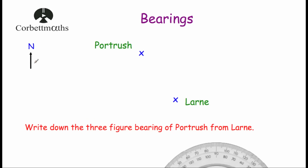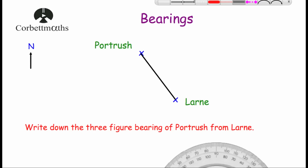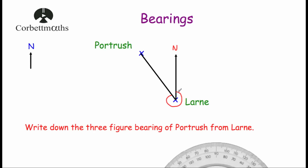So here's our next question. We've got Portrush and Larn, and the question says write down the three-figure bearing of Portrush from Larn. Our first step is to join up our two locations. We then read the question — we're starting at Larn — so we draw our north line at Larn. We mark on our angle, and remember bearings are measured clockwise from north. We start on our north line and go around clockwise until we get to the line that joins Portrush and Larn. This is a reflex angle — an angle greater than 180 degrees.